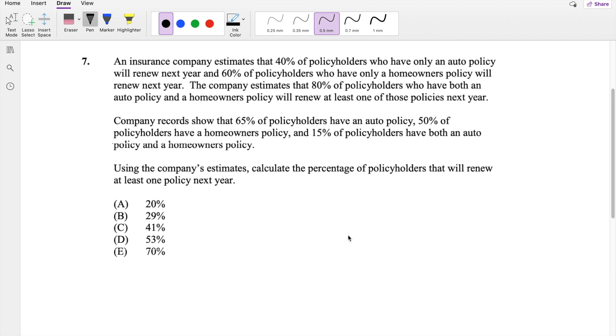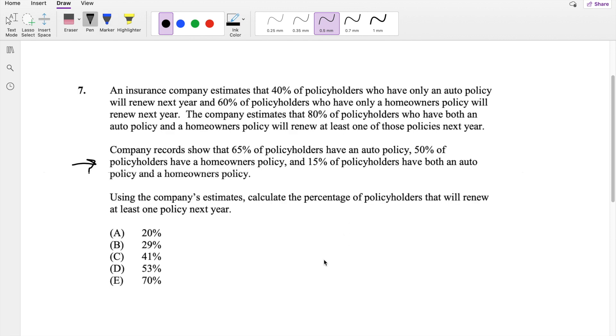Okay, I assume you're already tempted to just dive right in. I'm actually going to start with the second paragraph right here because I want to see what their customer demographics like. So they're saying that 15% have both, right? 15% have both an auto policy and homeowners.